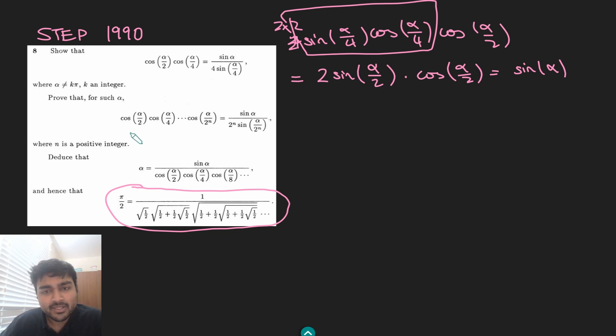We want to prove that for such alpha, this product now, so if we do the product cosine alpha over 2, cosine alpha over 4 and so on, up to cosine alpha over 2 to the n, we get sine of alpha divided by 2 to the n, sine of alpha over 2 to the n. This, again, is very similar to what we did up here. In fact, you can just prove this by induction. So I'm actually not going to go through the details here.